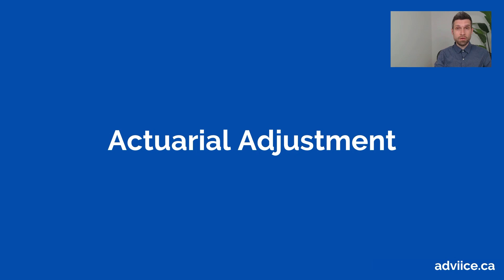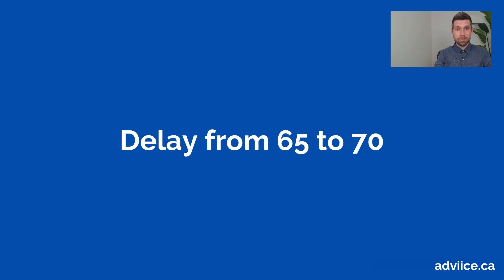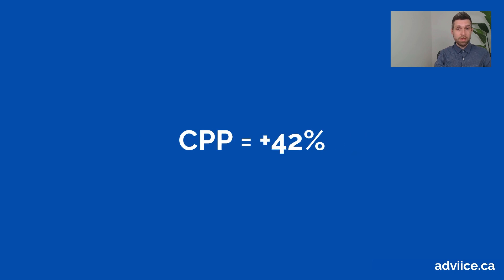When it comes to OAS breakeven, there are two important considerations, and one of them is the actuarial adjustment. When you delay from age 65 to 70, you get an increase — an incentive for delaying your benefits for those five years. For CPP that benefit is 42%, but for old age security that actuarial adjustment is only 36%. That six percent difference has a very big impact on the OAS breakeven point.